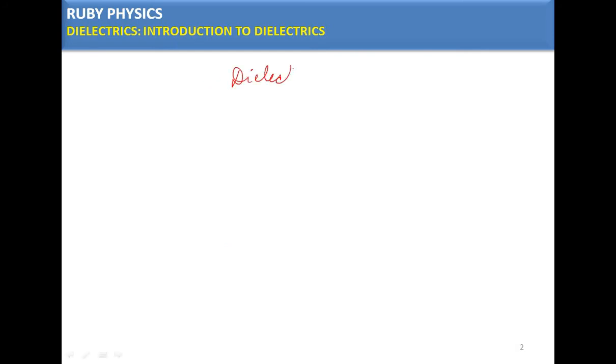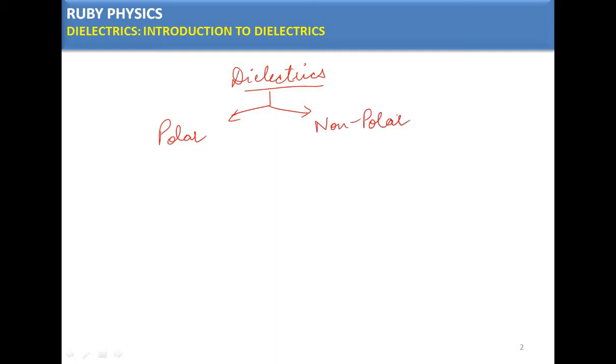So dielectrics are basically of two types: number one is polar dielectrics, and number two is non-polar dielectrics.